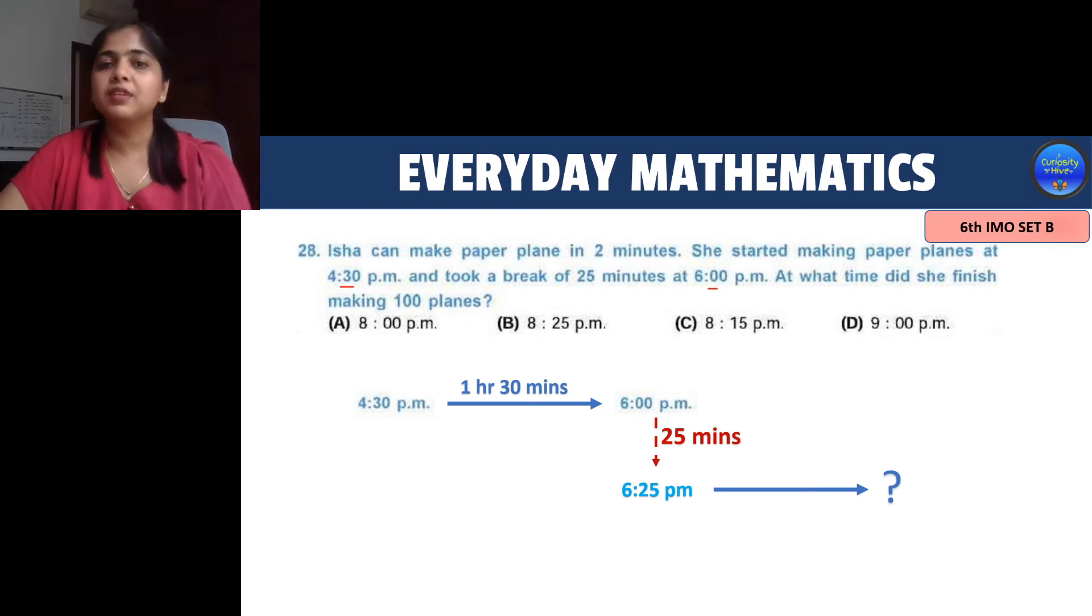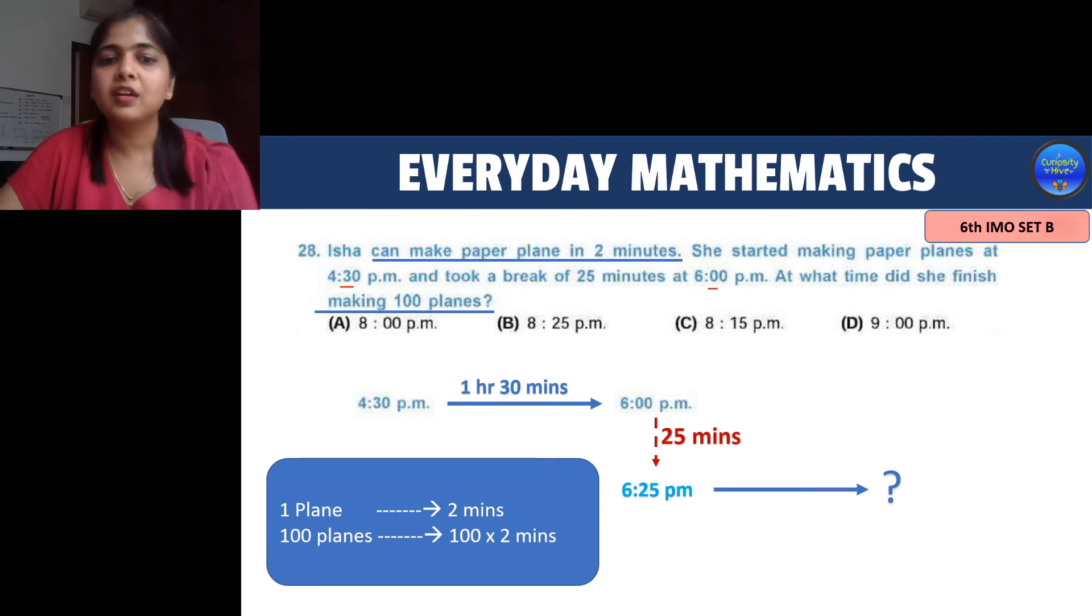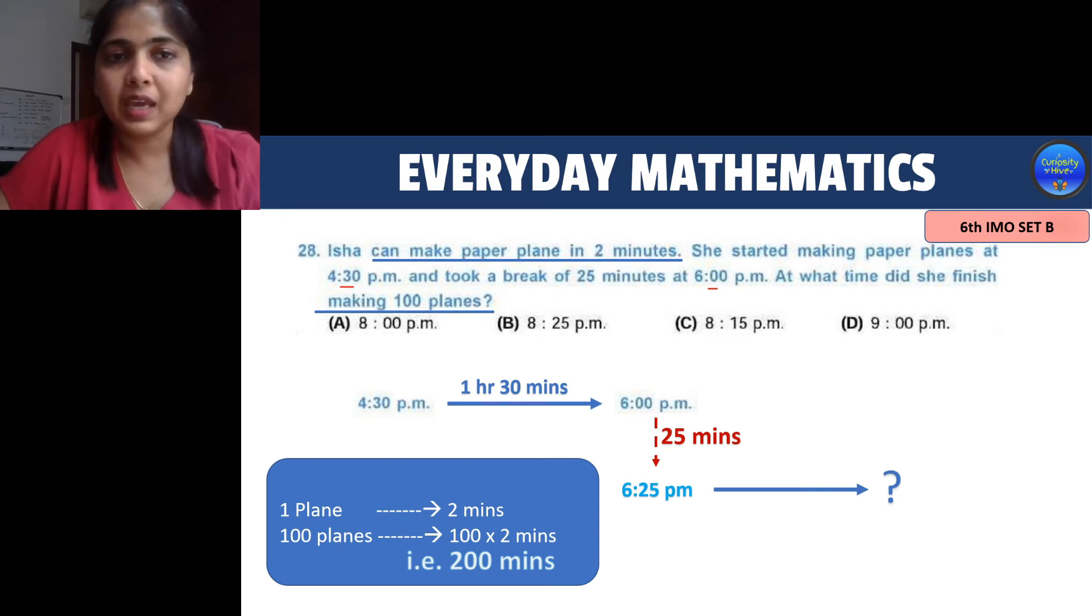Now let's understand what is given and what is being asked. Now it is said that Isha can make a plane in 2 minutes. So 1 plane takes 2 minutes and she needs to make 100 planes. So 1 plane is 2 minutes so 100 planes will take 100 times 2 which is 200 minutes. So 200 minutes is what she actually spent in making the 100 planes and now let's convert the times that she has worked in minute form. Now the first section that is 4:30 to 6 which is 1 hour 30 minutes so your 1 hour is 60 minutes plus the 30 minutes which is equal to 90 minutes.